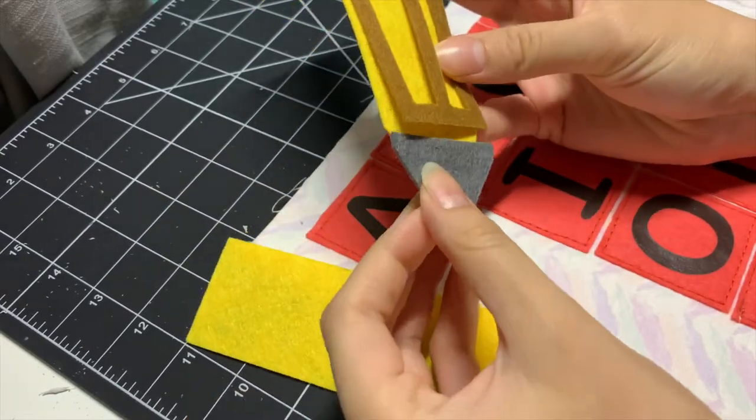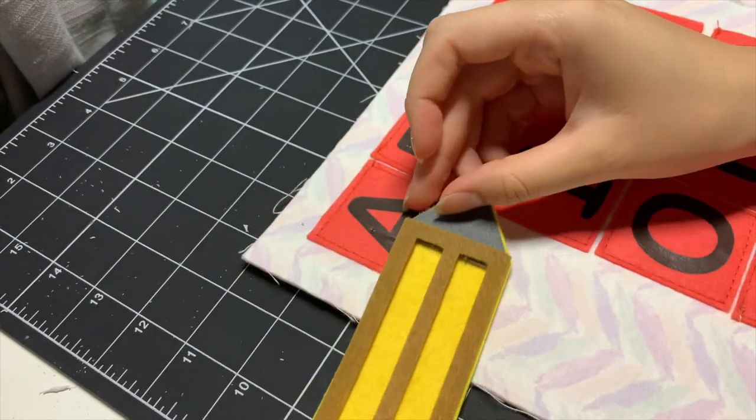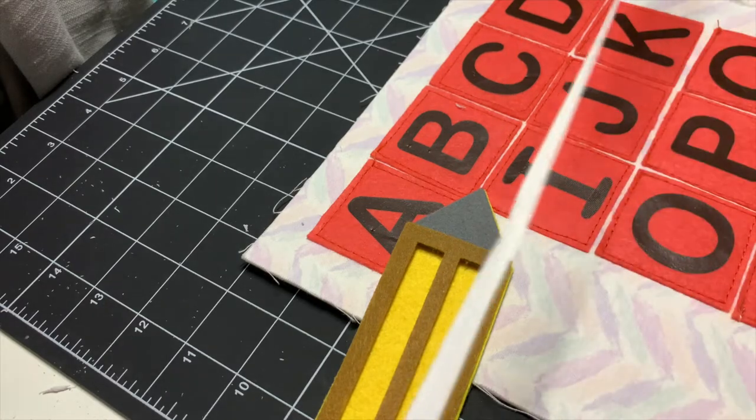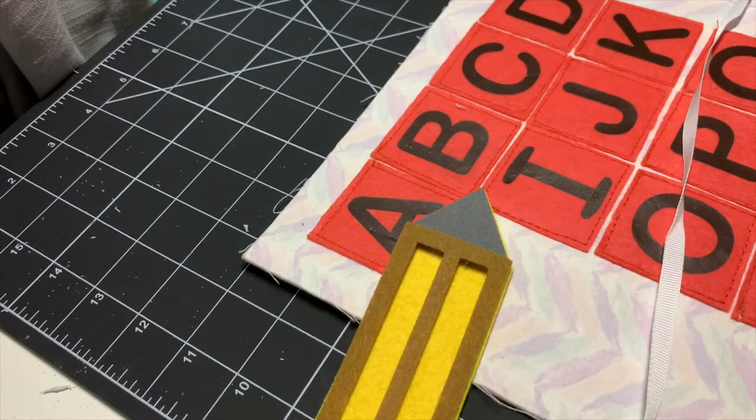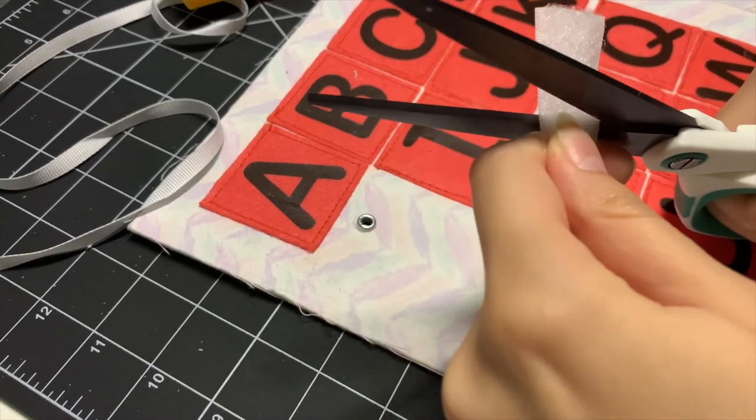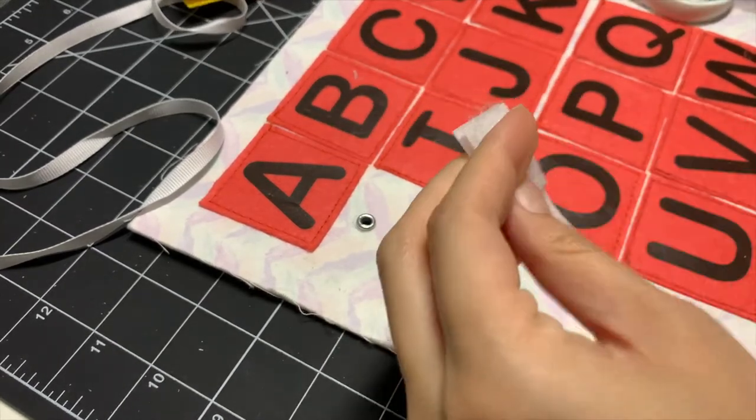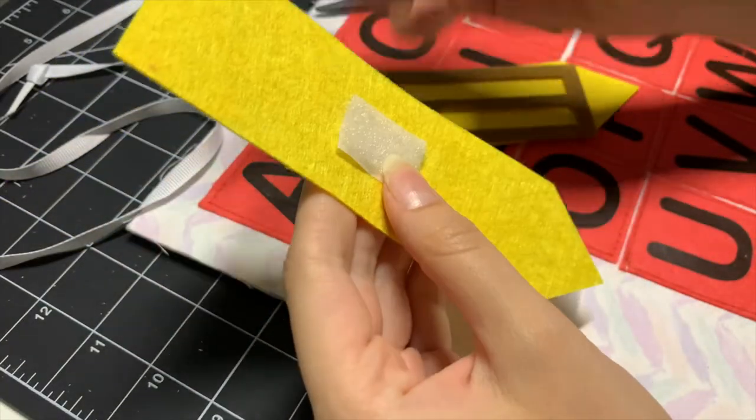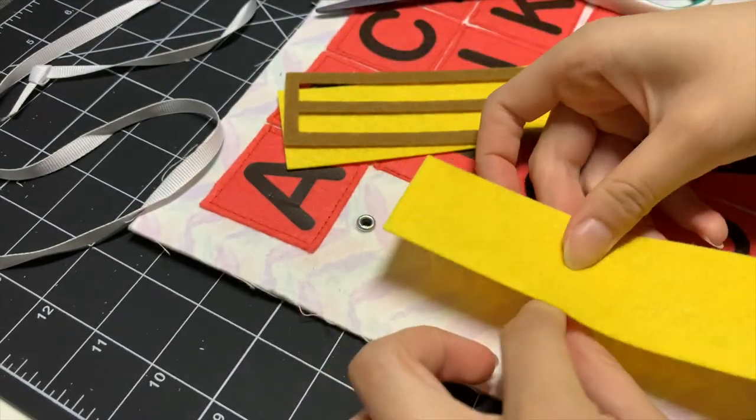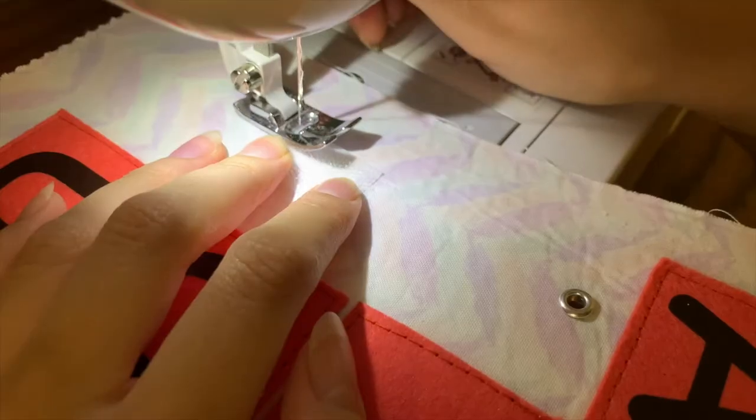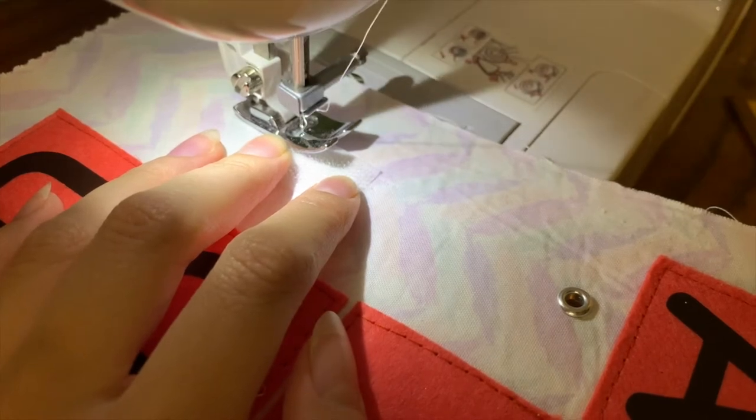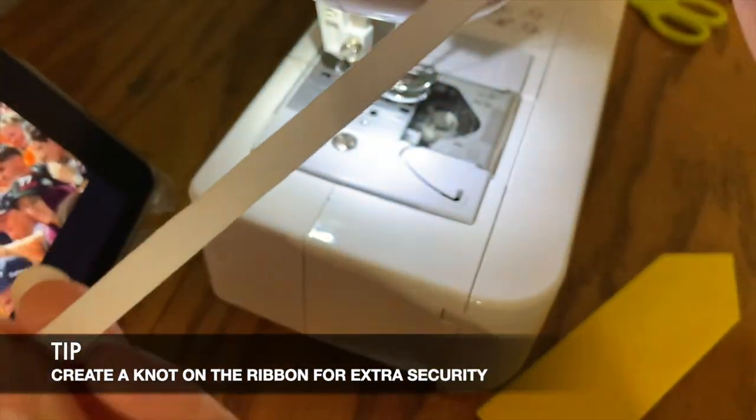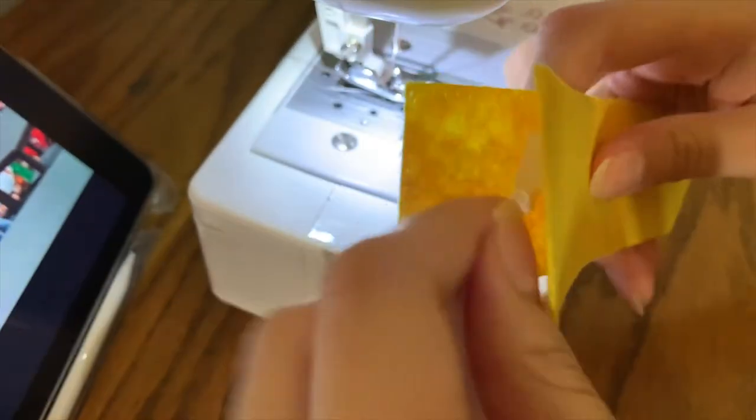The idea of having the pencil there was so that my niece can trace the letters with it. I decided to attach it to the page with Velcro, but also I want to do ribbon just so that the pencil doesn't actually detach from the page. So I just cut out the Velcro and attached it to the back of the pencil. The rough side of the Velcro I attached to the page and the softer side I attached to the pencil.